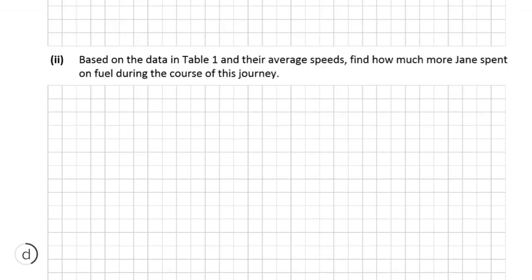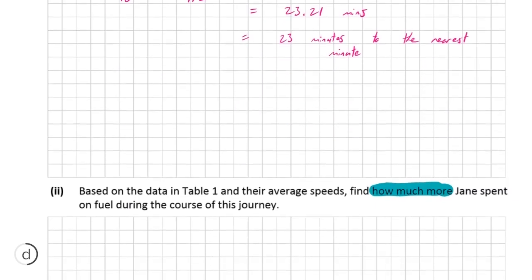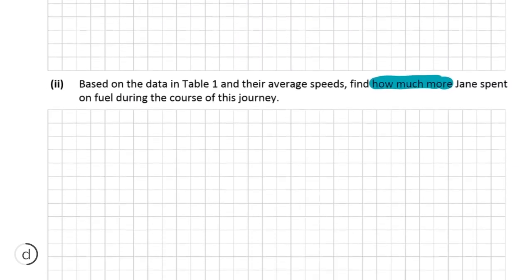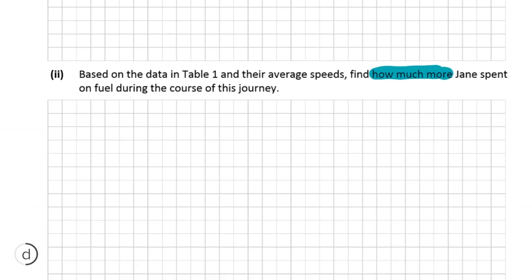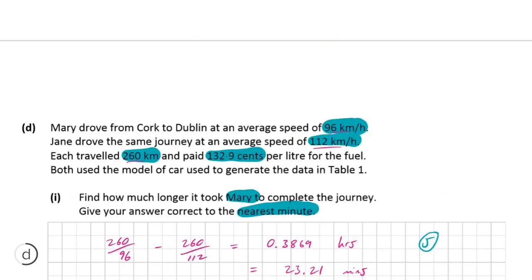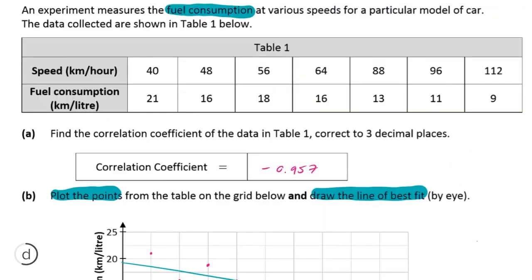So part two says, based on the data in table one and their average speeds, find how much more Jane spent on fuel during the course of the journey. So we know that Jane decided to drive faster. So she drove at 112 kilometers per hour, whereas Mary chose to drive at 96 kilometers per hour. And we also know that for this model of car, the faster you drive, the more fuel you're going to consume per kilometer traveled. So if we go back up to our table, table one, conveniently, they've chosen to drive at the same speeds we're given the fuel consumption for, which are 96 and 112.